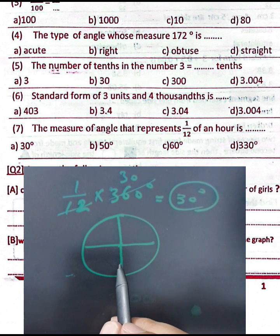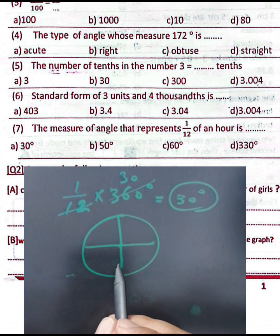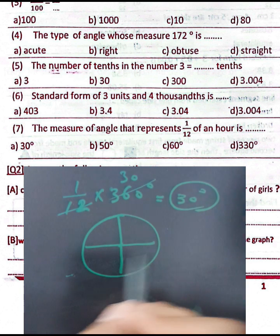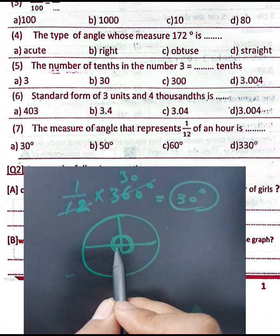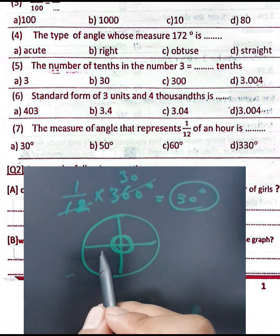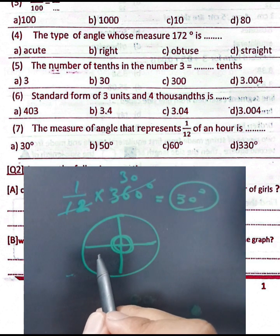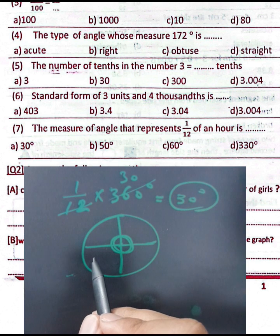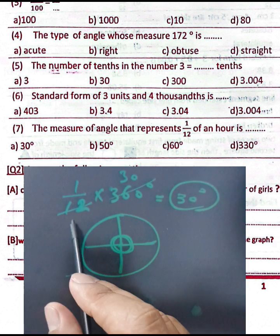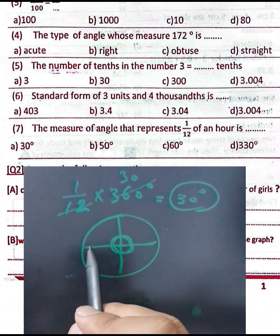To confirm: the measure of the angle representing one over 12 of an hour — it's a clock, meaning a full circle of 360 degrees. Multiply 360 by one over 12 and the result is 30 degrees.